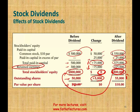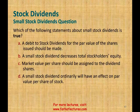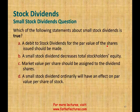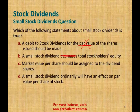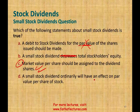Practice question: Which of the following is a true statement about small stock dividend? Option A — a debit to stock dividend for par value — no, that applies to large stock dividends. Option B — a small stock dividend decreases total equity — no, we just showed equity is the same before and after. Option C — market value per share should be assigned to the dividend shares — yes, that is correct. Option D — it has no effect on par value — incorrect. The answer is C.